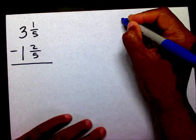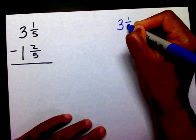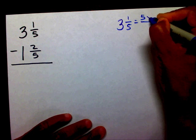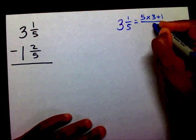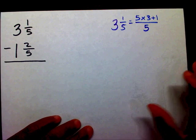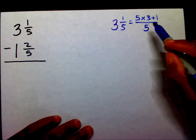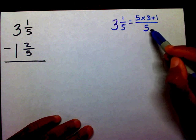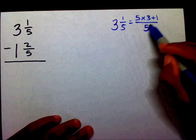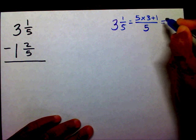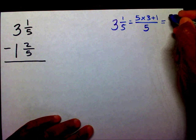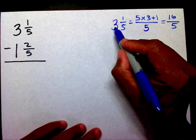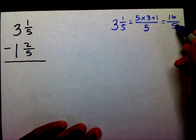So let's take three and one-fifths. We're going to multiply: five times three plus one. If you did not watch the video on changing mixed numbers to improper fractions, I would advise you to watch that video so you can see exactly what I'm doing here. Five times three is fifteen, plus one is sixteen-fifths.